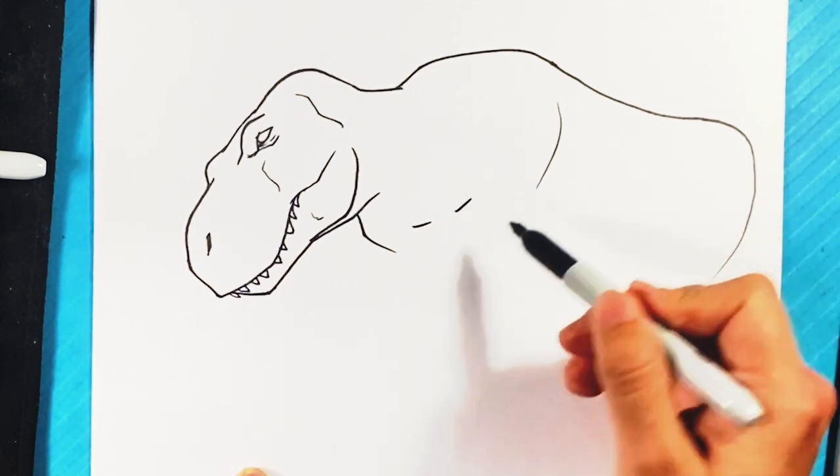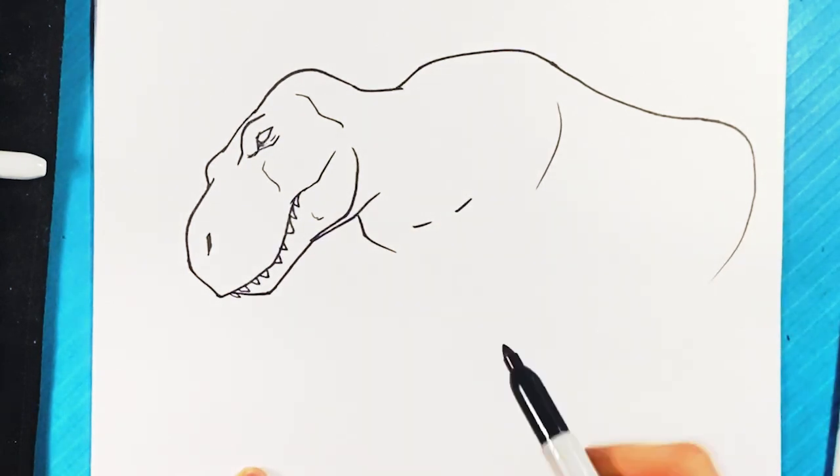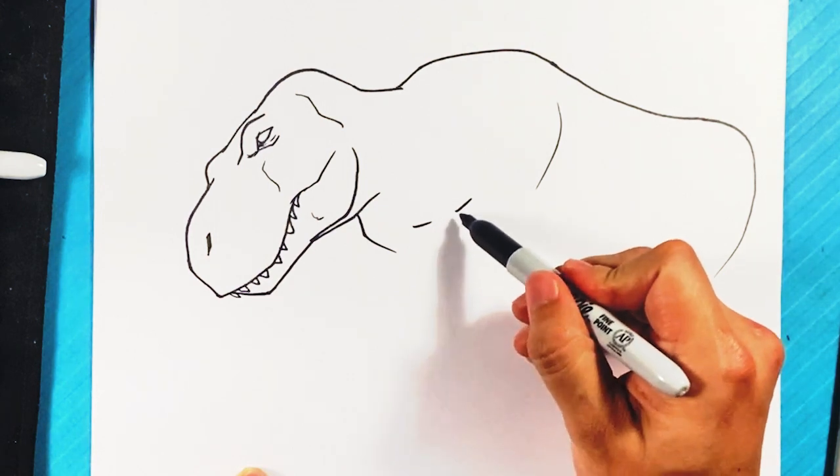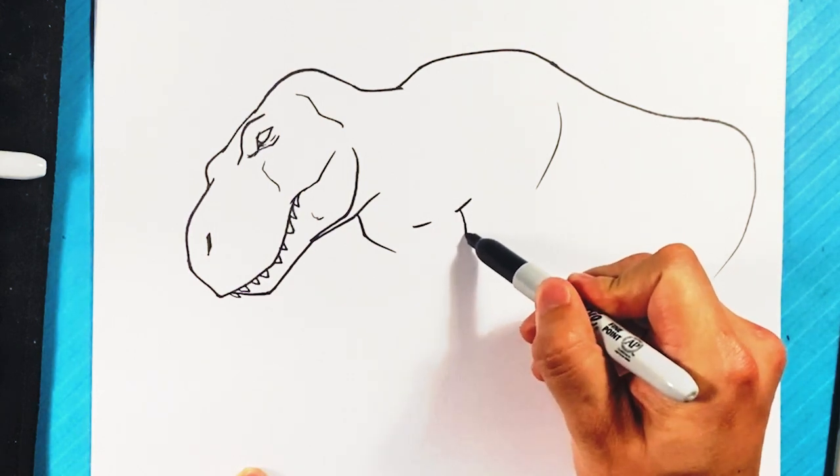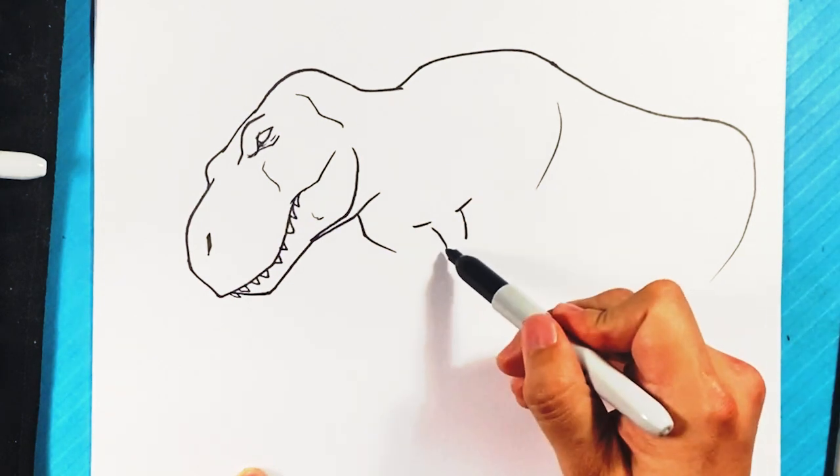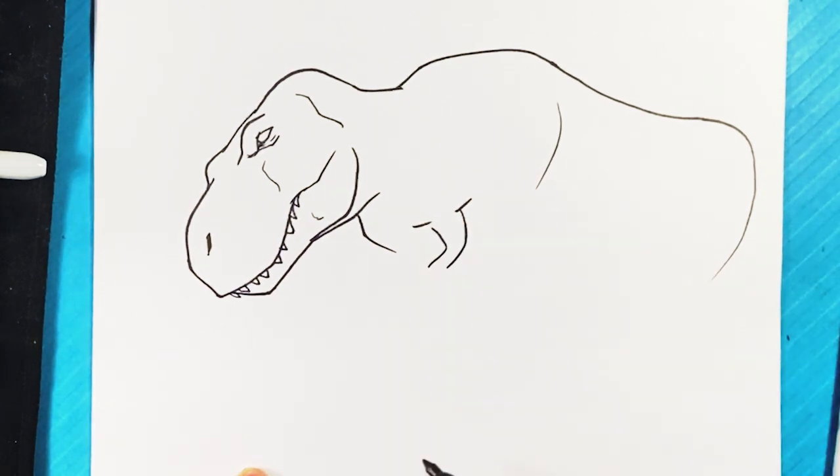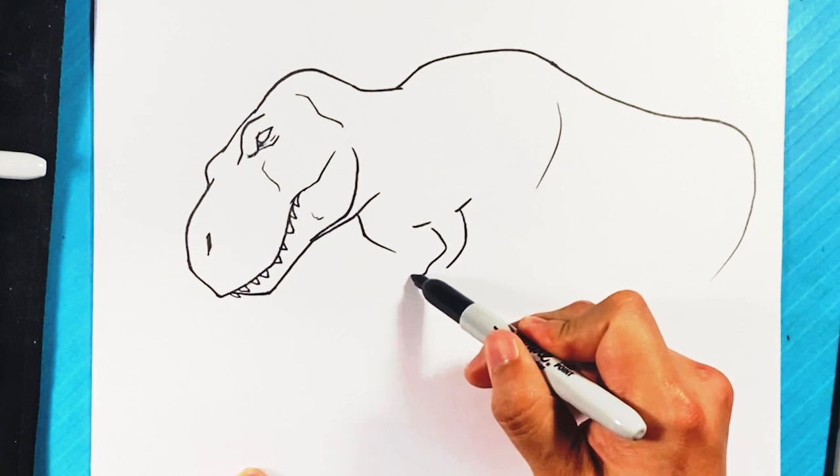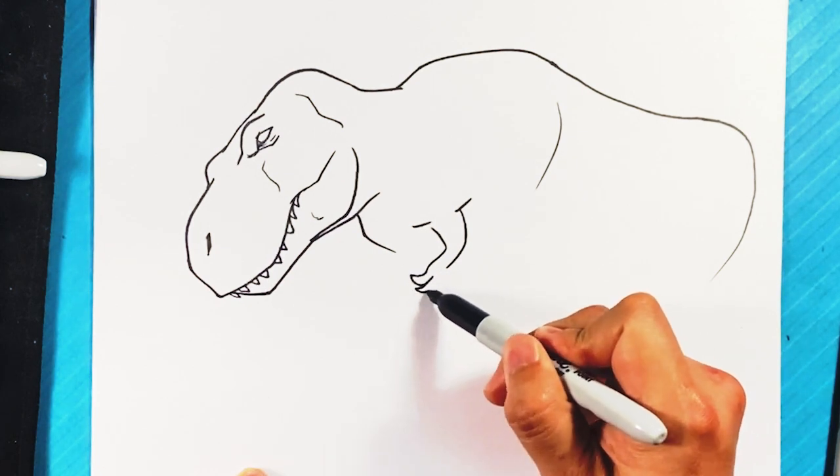Line over here, kind of where the hand's going to come up. We're not going to put the hand quite yet. Well let's just find the arm already. Line down right here, line down for kind of the top of the arm, pulling in, pulling in. Claw, claw, claw.